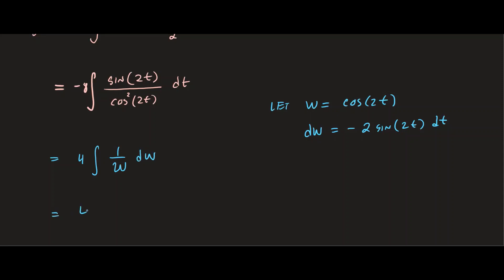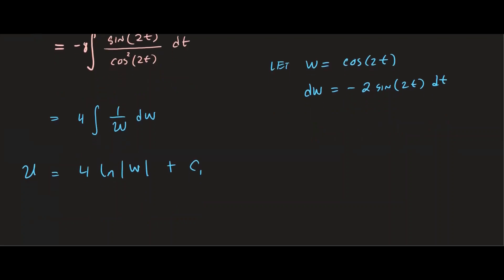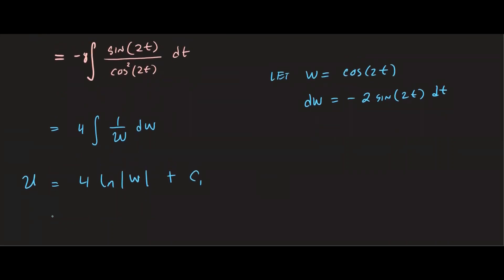Now we know that equals ln of absolute value of w plus a constant c1. Okay, so that's what u is equal to. Now let's substitute back what w was. So u is eventually just 4 times ln of cosine of 2t plus c1.